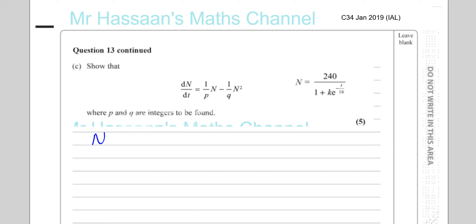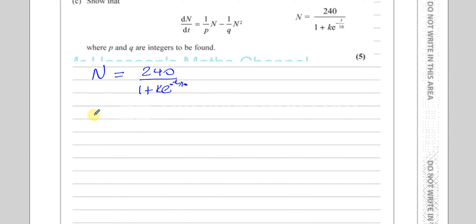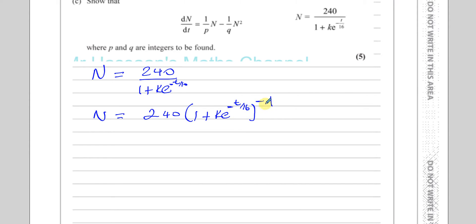It says n equals 240 over 1 plus k e to the power of negative t over 16. So let's get this ready for differentiation. We're going to write the bracket which is in the denominator as a numerator: 1 plus k e to the power of minus t over 16, to the power of negative 1. Here we have a function inside a bracket to a power, and we want to differentiate it — we can use the chain rule.